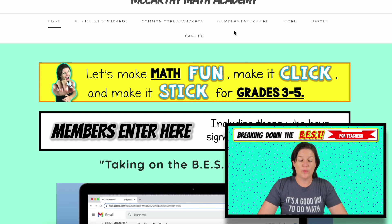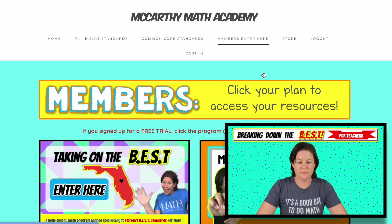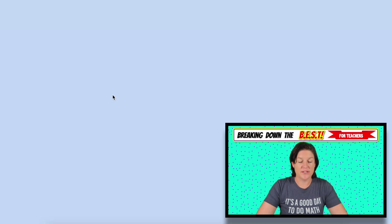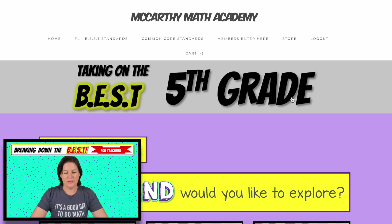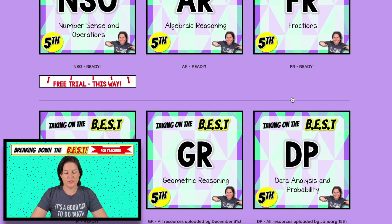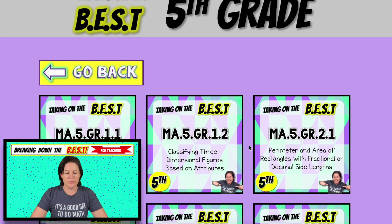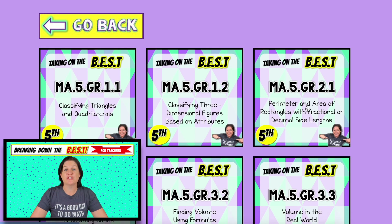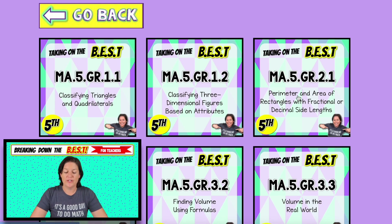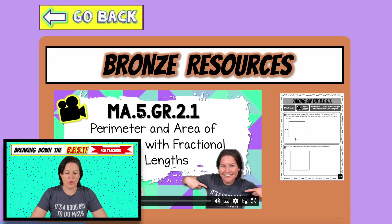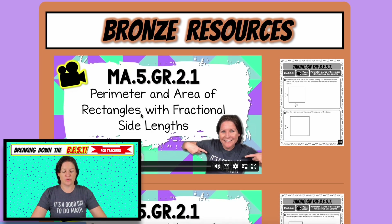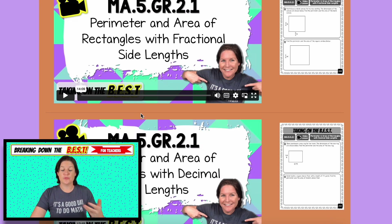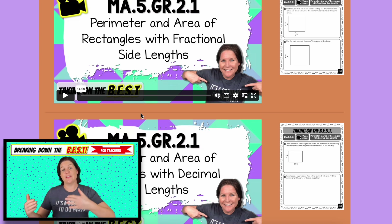Here we are at the website. We're going to click Members Enter Here, then select Taking on the Best Fifth Grade and scroll down to your GR strand — Geometric Reasoning. We're right here at MA.5.GR.2.1, the perimeter and area of rectangles with fractional or decimal side lengths. The first page you open to is your bronze resources — your video lessons and printable student guides, where students can watch video lessons and record notes to use when they go out to practice more.